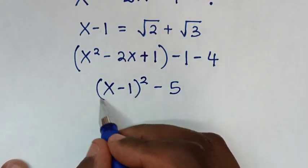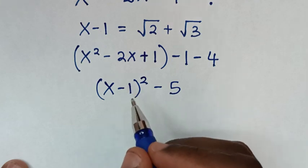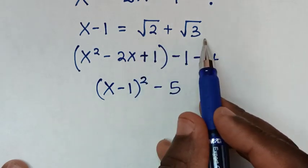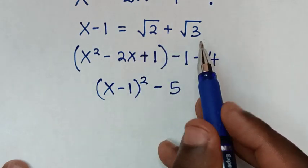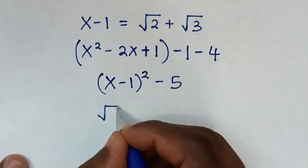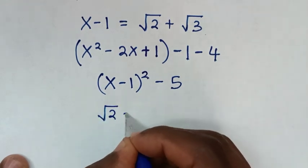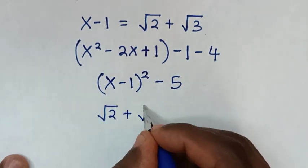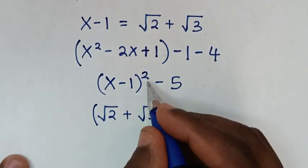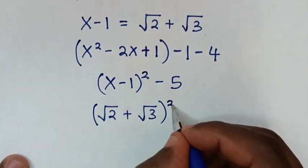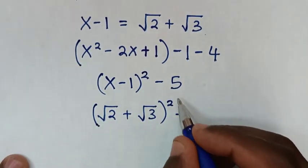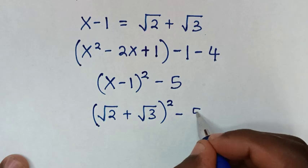Since x - 1 = √2 + √3, we substitute (√2 + √3) into the bracket, giving (√2 + √3)² - 5.